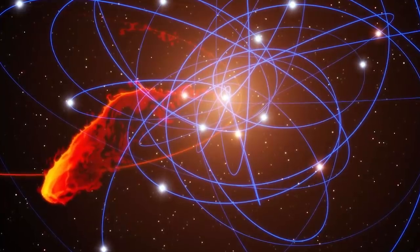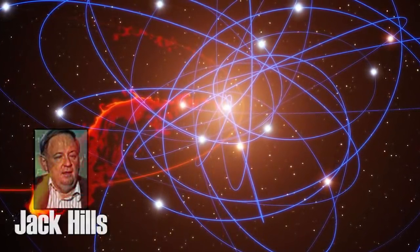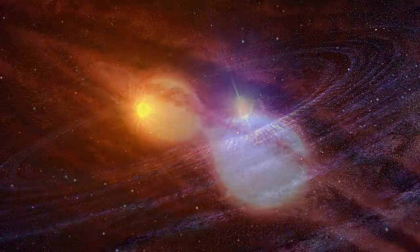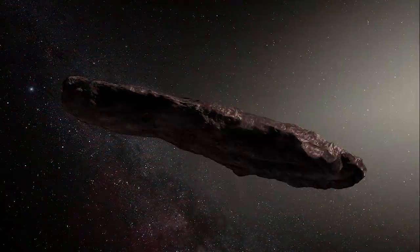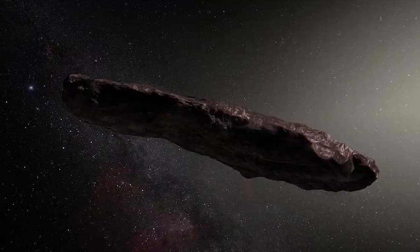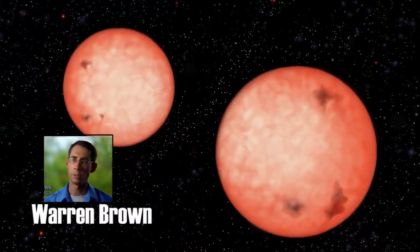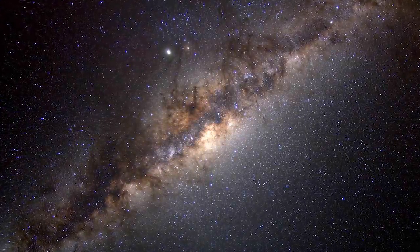Called hypervelocity stars, their existence was first predicted by astronomer Jack Hills in 1988, who described a hypothetical encounter between a supermassive black hole and a binary star system. When one of these two stars orbiting each other is consumed by the black hole, the other is flung out at extremely high speeds. His theory was not accepted until 2005, when another astronomer, Warren Brown, observed a star that was leaving the Milky Way galaxy at 853 kilometers per second, or over 3 million kilometers per hour.